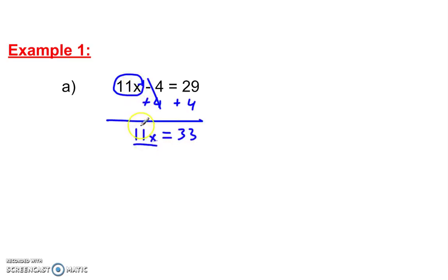Now, what was inside the circle, we want to undo. Divide by 11. Divide by 11. And there you go. x equals 3. Easy peasy.